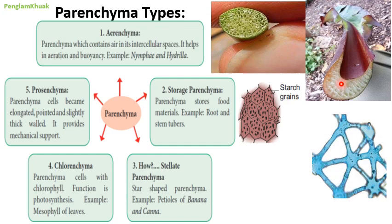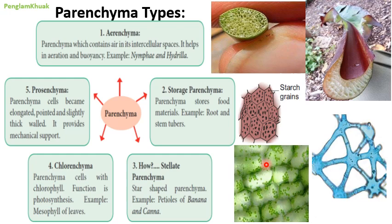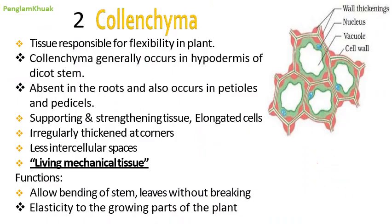Number four is chlorenchyma — parenchyma cells that contain lots of chlorophyll within the cells. Chlorophylls are green pigments that trap sunlight, and because of these pigments photosynthesis occurs inside these cells to prepare food (starch) for the plant. An example is the mesophyll cells of the leaf. Number five is prosenchyma — parenchyma cells that are elongated with pointed and slightly thick walls, providing mechanical support.